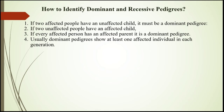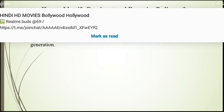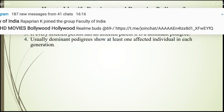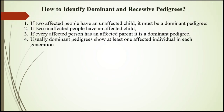Third: if every affected person has an affected parent, then it is a dominant pedigree. Usually in a dominant pedigree chart, every generation has at least one affected individual. If every generation does not have at least one affected individual, then it is recessive; if every generation gets at least one affected person, it is a dominant pedigree.